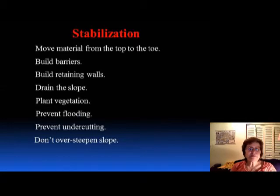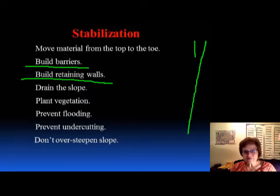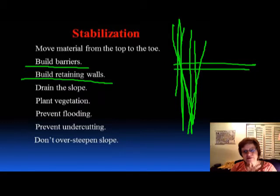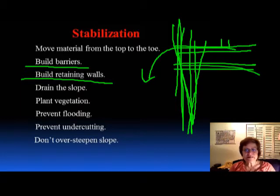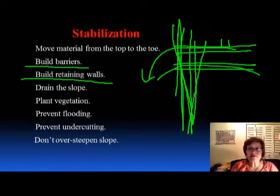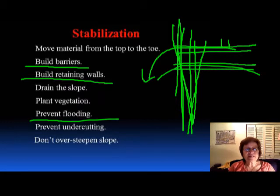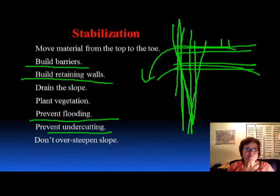What can you do to stabilize the slope? You can build barriers and retaining walls, but if you have a whole mountain behind the retaining wall, you have to have pipes behind it so they can collect the water out. If water collects behind the wall and it's heavy, freezes, and rains, it brings down the whole wall. But if there are pipes that constantly drain water out of the slope, it won't get too heavy. It is very important to prevent flooding and prevent undercutting — don't cut very steep slopes and don't over-steepen any slope.